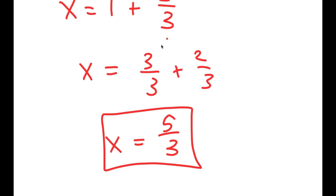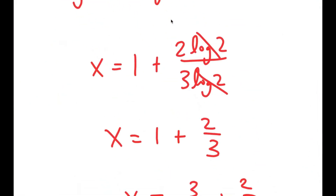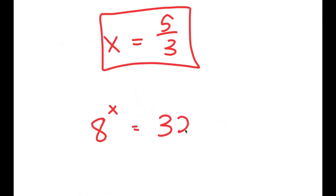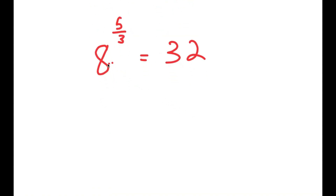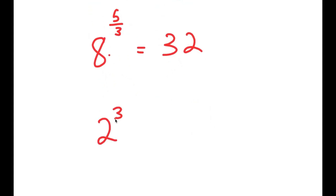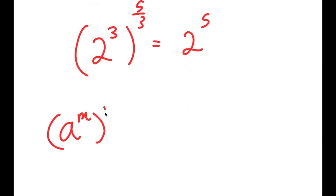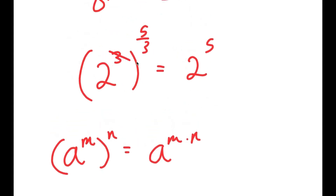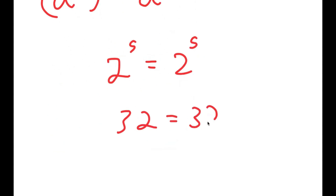Now, how do we know that this is the right answer? Going back, we have 8 to the power of x equals 32, and we're plugging in 5 over 3. So we get 8 to the power of 5 over 3 is equal to 32, which is the same thing as 2 to the power of 5. Now, 8 is the same thing as 2 to the power of 3, so I get 2 to the power of 3 to the power of 5 over 3. And if I have something in the form a to the power of m to the power of n, this equals a to the power of m times n, so the two 3s cancel out, and I get 2 to the power of 5 is equal to 2 to the power of 5, or 32 equals 32. This is right.